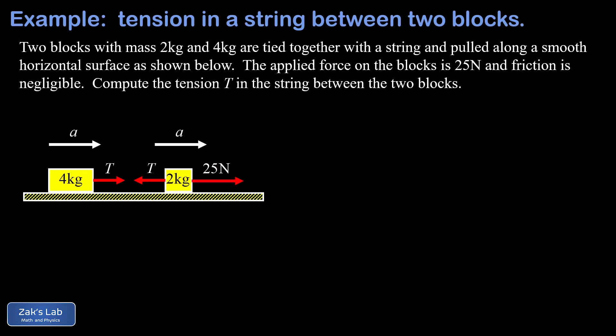So we're showing that tension pulling on the 4 kilogram block, that's the only horizontal force it experiences. And then the tension pulling to the left on the 2 kilogram block. And then our external force pulling to the right at 25 newtons on that 2 kilogram block. And both of these blocks share the same unknown acceleration a.